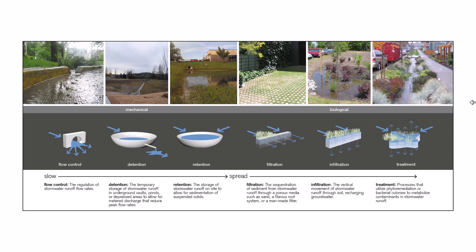We have flow control facilities, detention facilities, retention facilities, and then things for filtration, infiltration, and treatment. The mechanical designs on the left include different flow control structures, weirs, and outlets to detention and retention facilities. On the right are more biological designs such as bioretention, which we're going to go over in this video, and rain gardens, which are also very common. The mechanical ones serve more towards flow control and detention, while the biological ones serve more towards filtering the water and treating it in a water quality fashion.